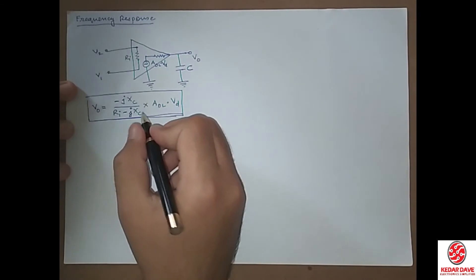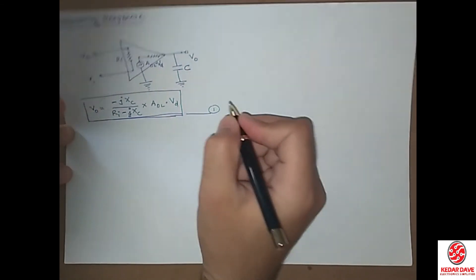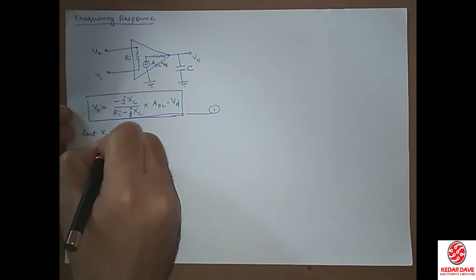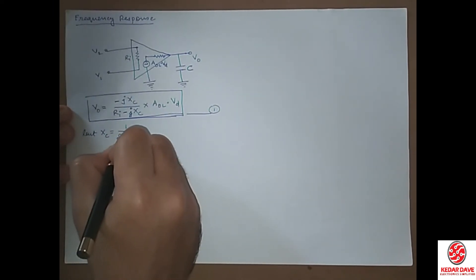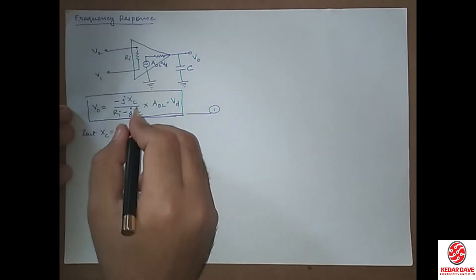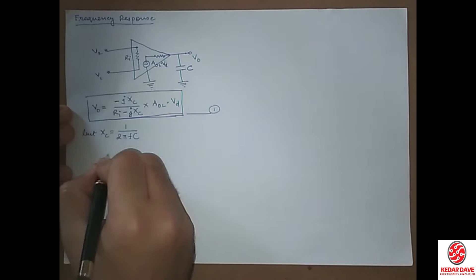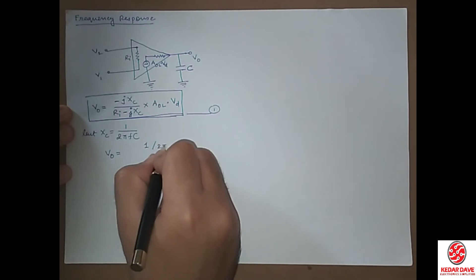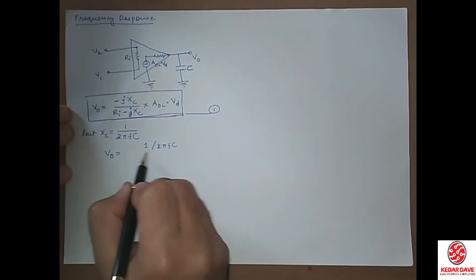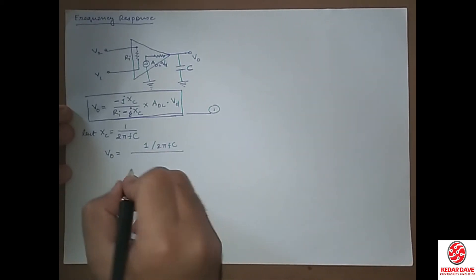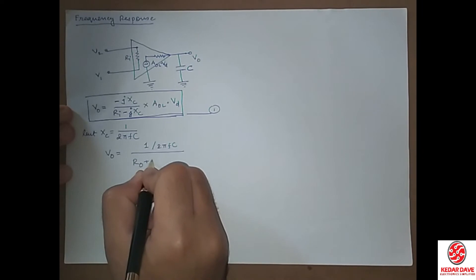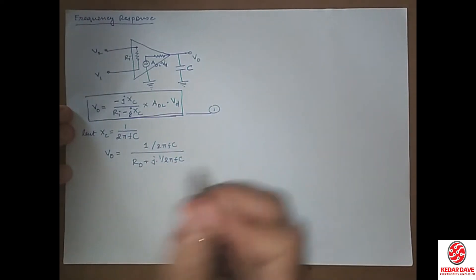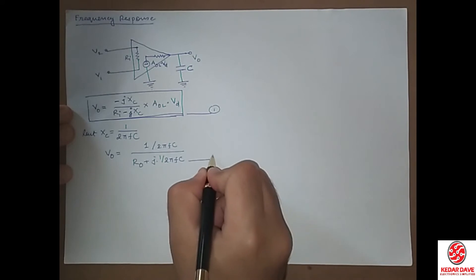This term is the basic output equation of the operational amplifier. From this equation we can write xc equal to 1 divided by 2πfc. Putting this value in place of xc, we write 1 divided by 2πfc divided by Ro plus j times 1 divided by 2πfc. So this will be our second equation.